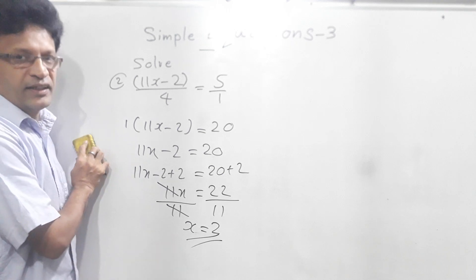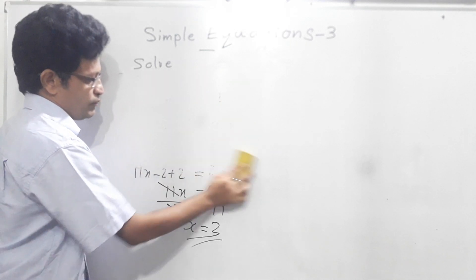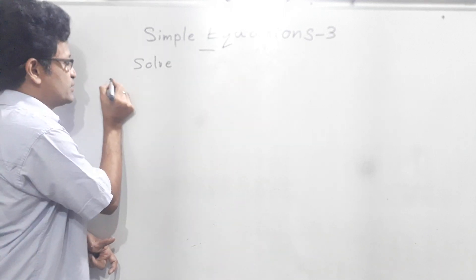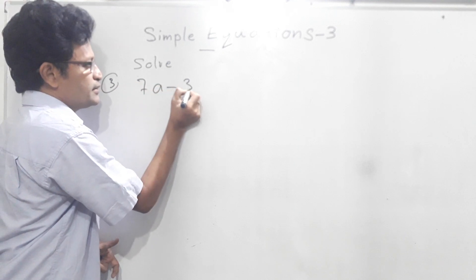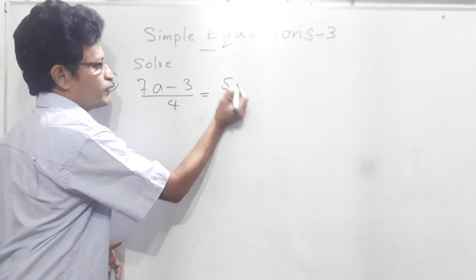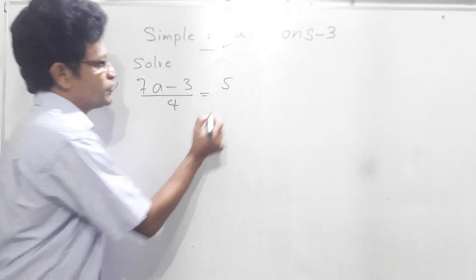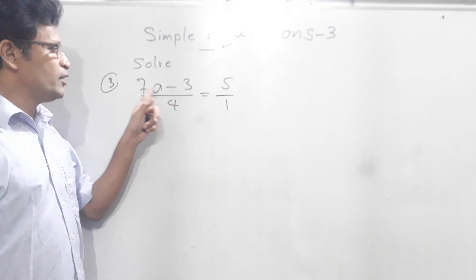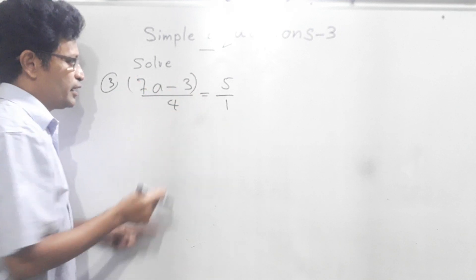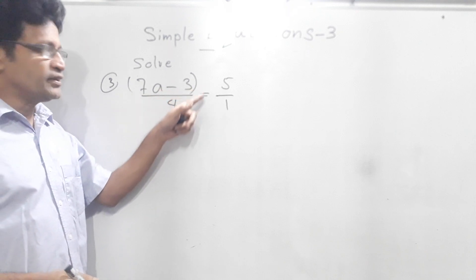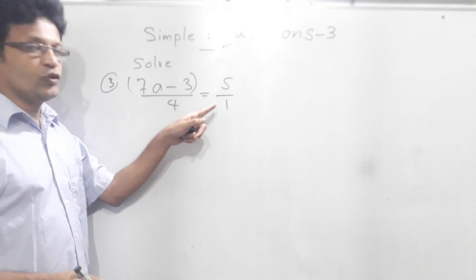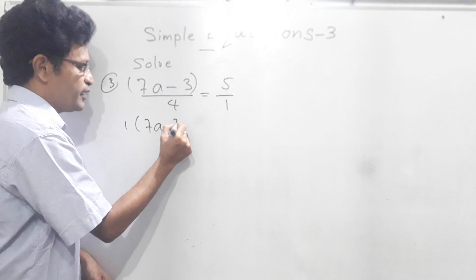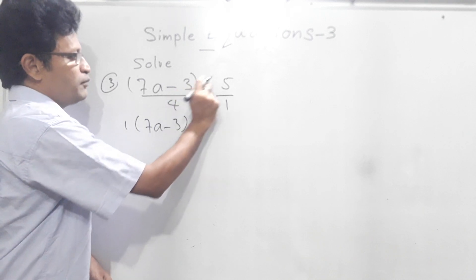Now we will do another question. Third question: 7a minus 3 over 4 equals 5. Now 5 means 5 over 1. We can do the cross multiplication. 1 and (7a minus 3) — we can put a bracket here, because if you have some other number here then you don't make any mistakes. So 1 and (7a minus 3) we have to multiply. 1 into (7a minus 3) equals 4 times 5, which is 20.